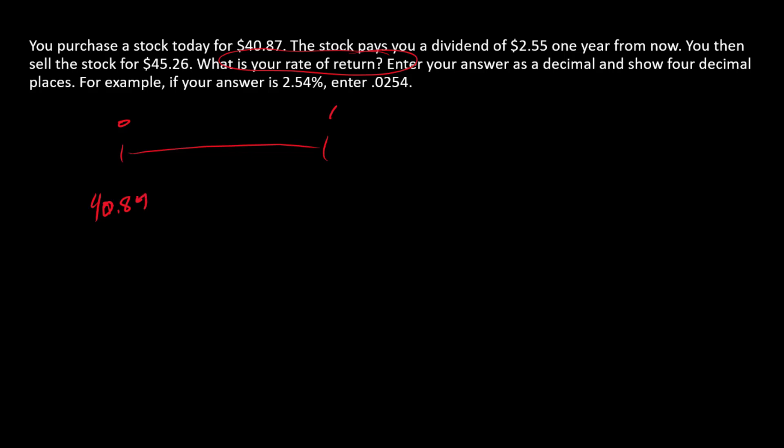Then in period one, that's one year from the purchase, got a dividend of $2.55 and a sales price of $45.26. Going back to our fundamentals, when we do time value of money calculations, we're really after a discount rate that sets the present value of all of this equal to the price.